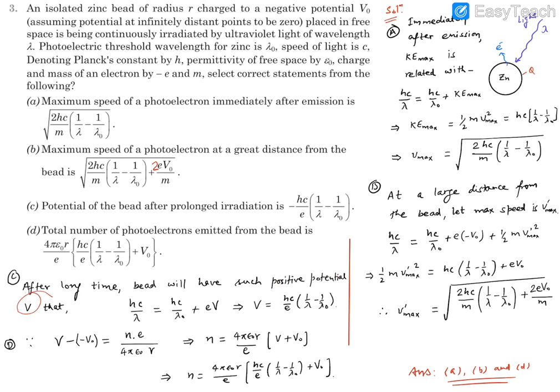After a long time, it will have a positive potential V. So V is going to be HC/lambda equals HC/lambda naught plus EV. The maximum kinetic energy of the electron can be compensated by this V potential. This positive potential is HC/E(1/lambda minus 1/lambda naught). Whereas this has a minus sign, that's not correct. Hence option C is not correct.